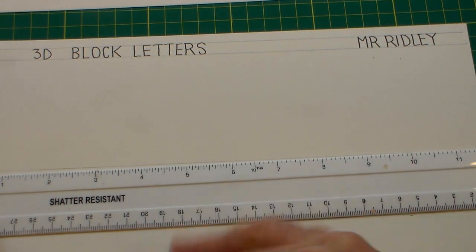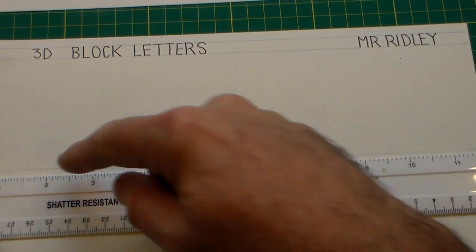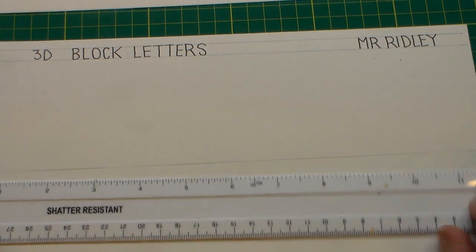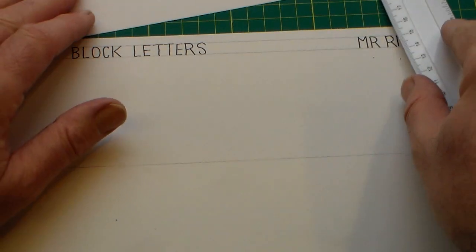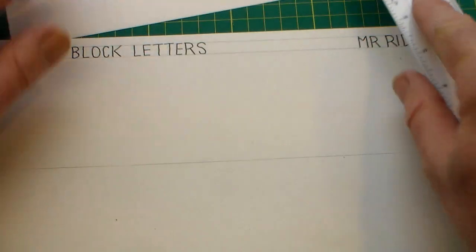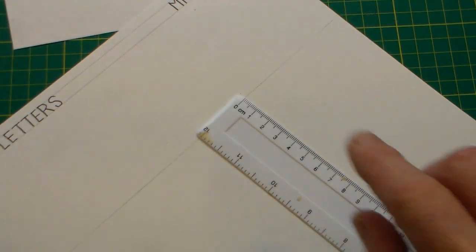So I'm drawing a line approximately in the center. I'm doing a horizontal line and then I'm going to measure four centimeters.